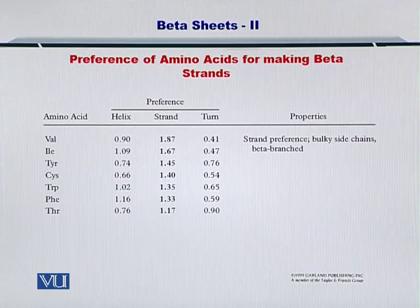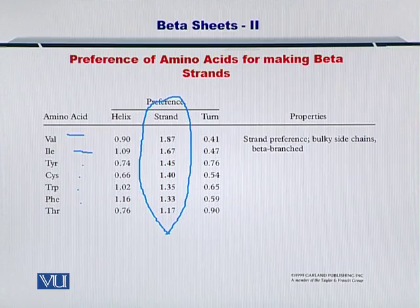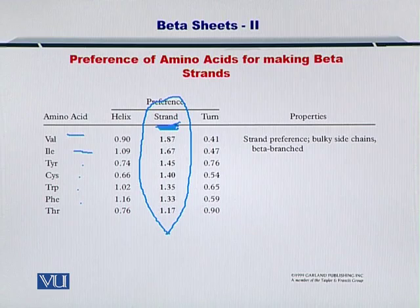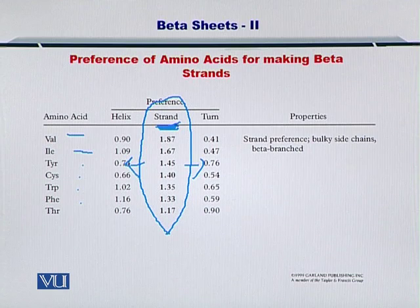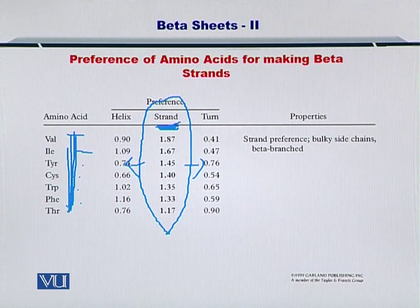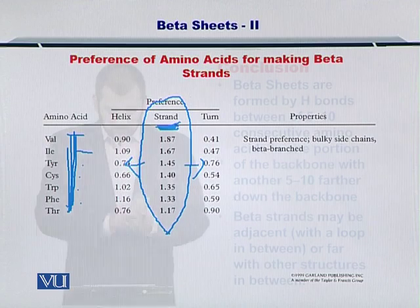There are some preferences in amino acids for the formation of beta sheets. Amino acids like valine, isoleucine, and so on have a very high preference for strand formation, which is the same as preference for beta sheet formation, and you can see that it's much bigger compared to the turns or the helices. Therefore, we consider these amino acids to be beta sheet formers, and if you are given a protein sequence with several of these amino acids, you can guess that maybe this protein folds into a beta sheet.